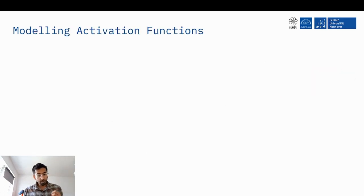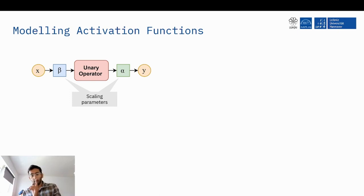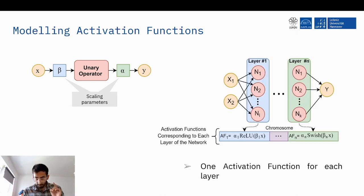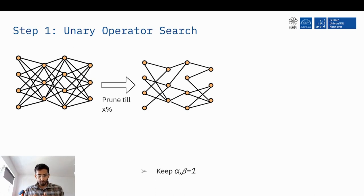The way we do this is to first model the activation function as a combination of a unary operator like tanh, relu, swish and scaling parameters for the input and the output of the network. Having done this design, we then do the tuning layer by layer, i.e. each layer having the same parameters. This involves two steps.